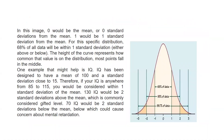Now, what does this tell us about 68%, 95%, and 99.7% of data? In this image, 0 is the mean — zero standard deviations from the mean. The value 1 represents 1 standard deviation from the mean, both to the right and to the left. For this specific distribution, 68% of all data will fall within 1 standard deviation of the mean.